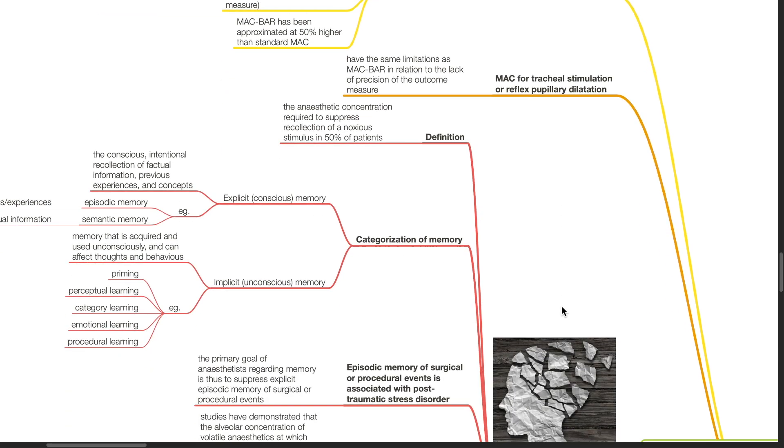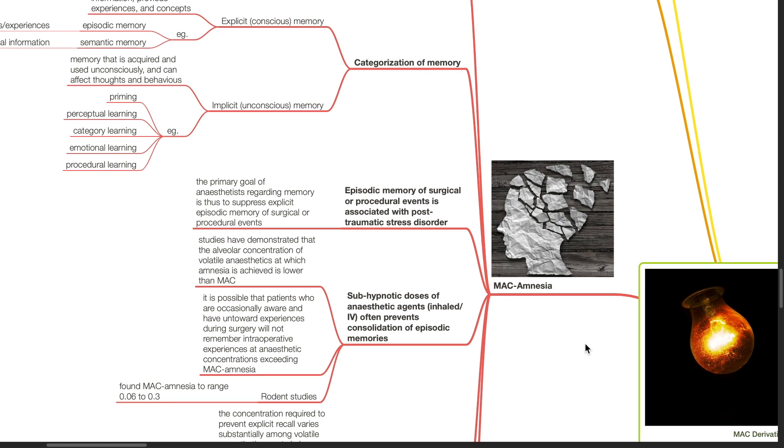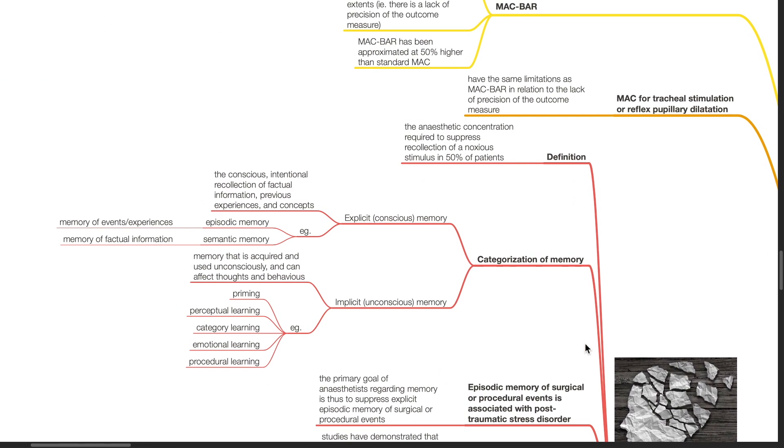MAC amnesia. This is defined as the anesthetic concentration required to suppress recollection of a noxious stimulus in 50% of patients. Memory can be categorized as explicit or conscious memory and implicit unconscious memory.